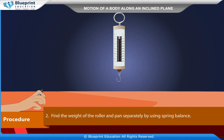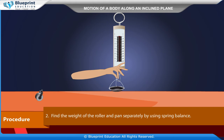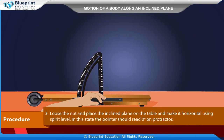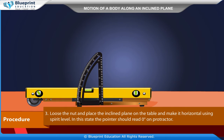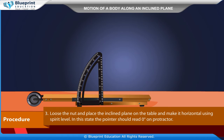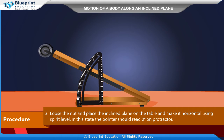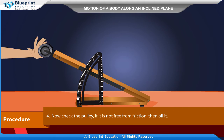Procedure: First, determine the least count and zero error of the spring balance. Find the weight of the roller and pan separately using the spring balance. Loosen the nut and place the inclined plane on the table; make it horizontal using a spirit level. In this state, the pointer should read zero degrees on the protractor.